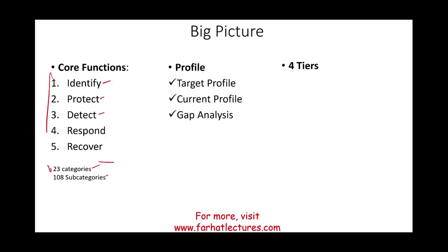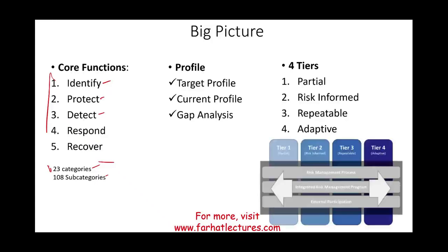After creating the profile, you classify your organization under one of four tiers. Are you Partial, Risk-Informed, Repeatable, or Adaptive? You need to determine what level you're at in cybersecurity so you're at least aware of where you stand. Tier one is the least mature — essentially a novice or amateur level — while tier four is the most mature.